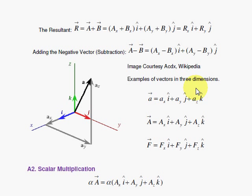In three dimensions, we have I hat, the unit vector pointing in the x direction, J hat in the y, and K hat in the z direction. So we can write vectors like this.